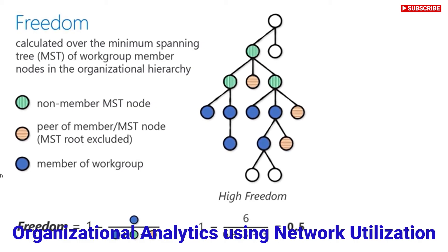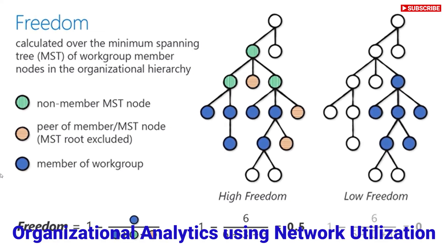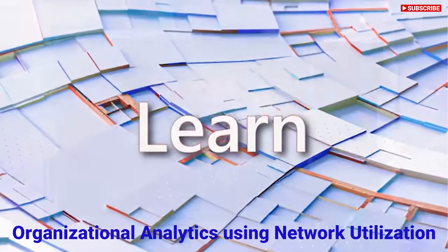To give you a quick example: a group with very high freedom is probably working across the company — an engineering group working with marketing, sales, and finance would have a lot of freedom because those people are working with others not necessarily in their hierarchy. Conversely, a group with very low freedom is really only working within the confines of that HR-defined organization and not collaborating with people outside that group.